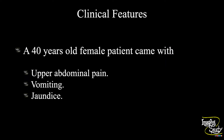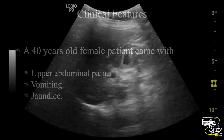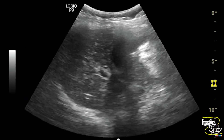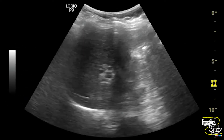A 40-year-old female patient came with upper abdominal pain, vomiting, and jaundice. This patient came in at 2 a.m. midnight. Let's see what we have got on ultrasound.